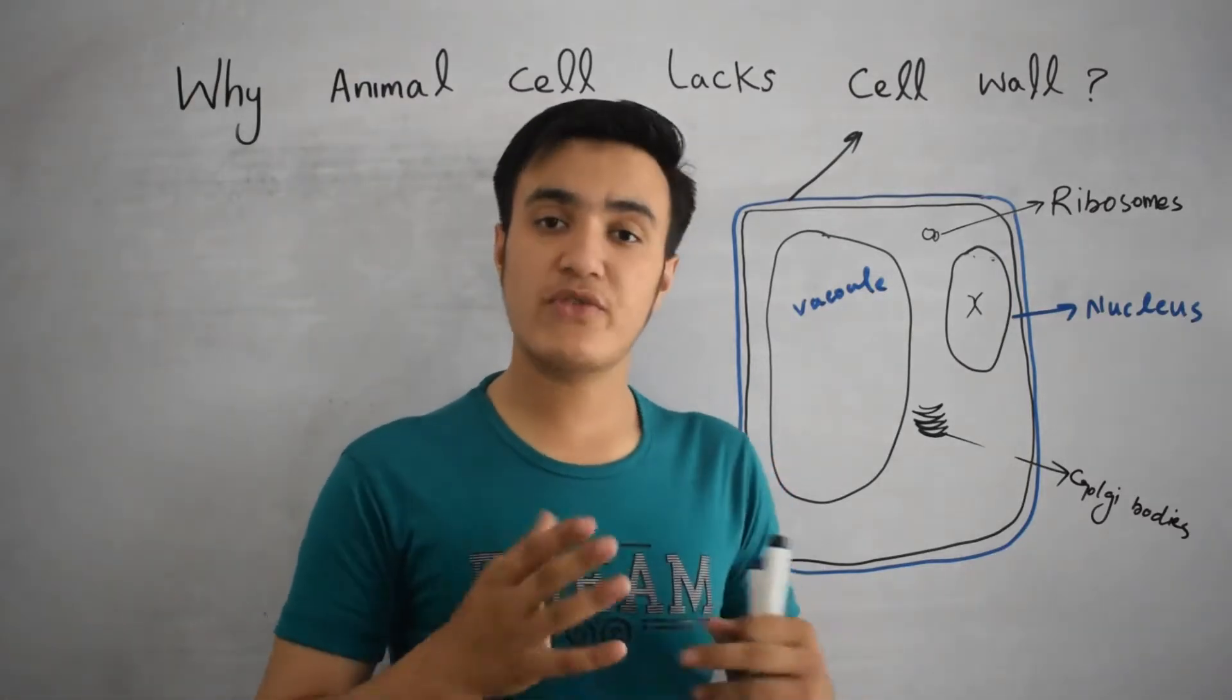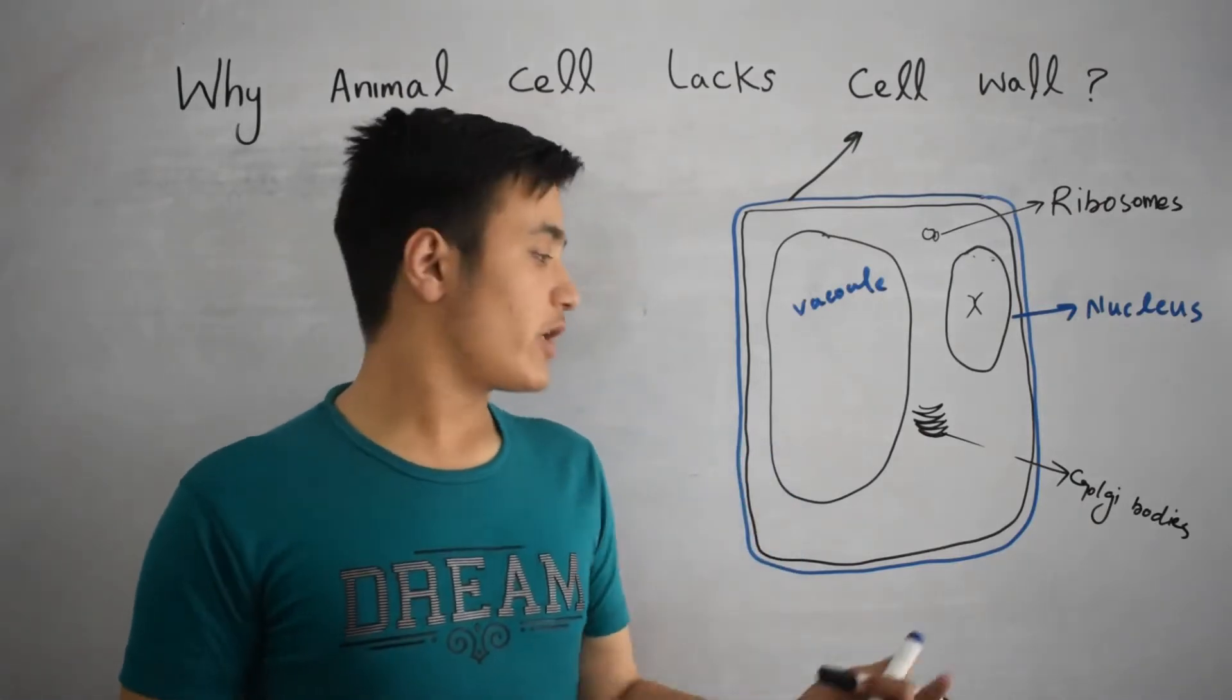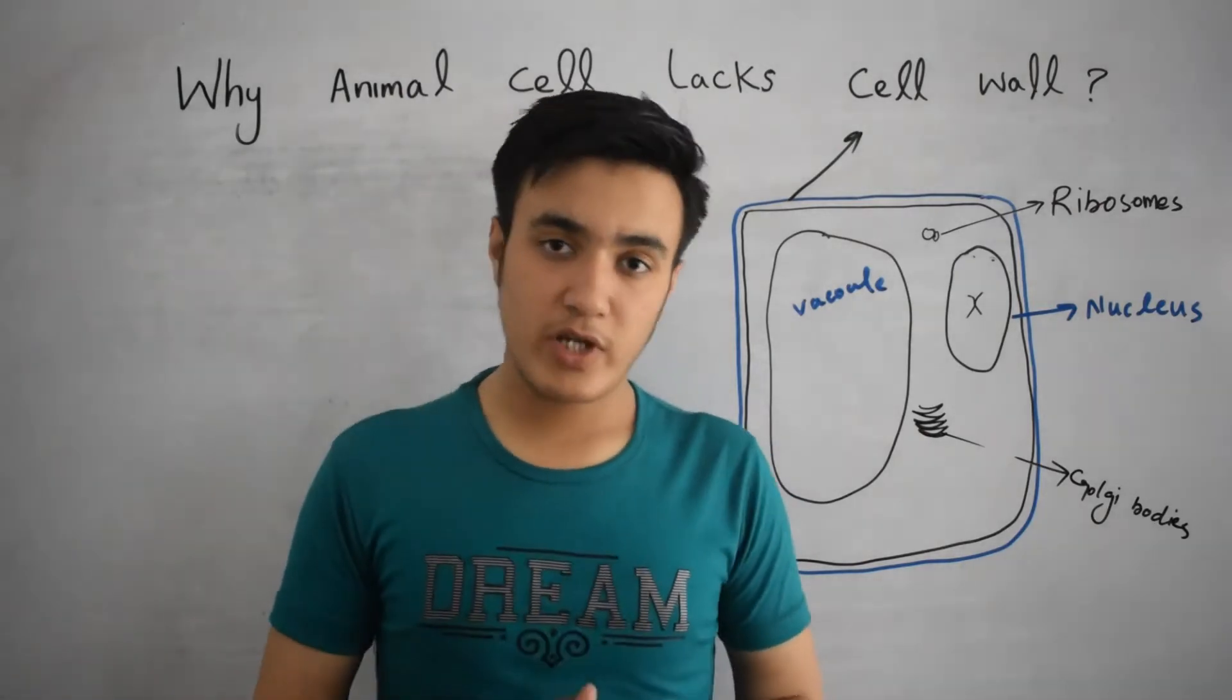Cell wall, cell membrane, nucleus and cytoplasm. Here the cell wall is present in plant cell while it is absent in animal cell.